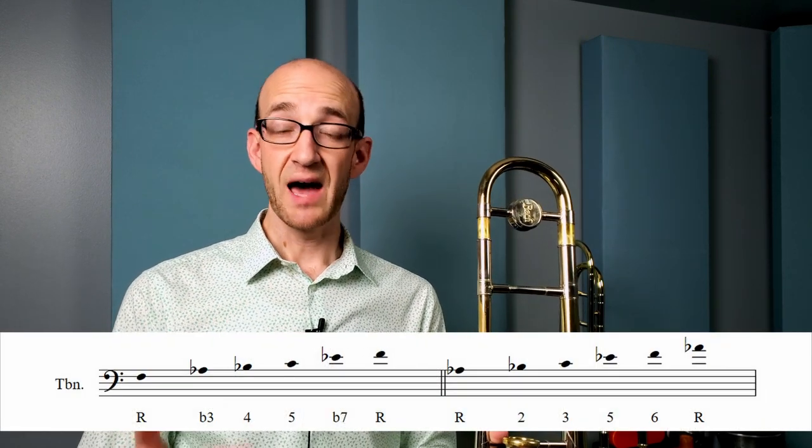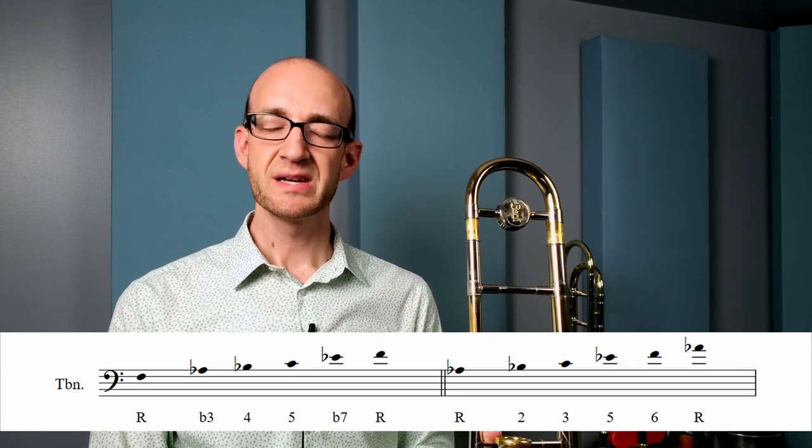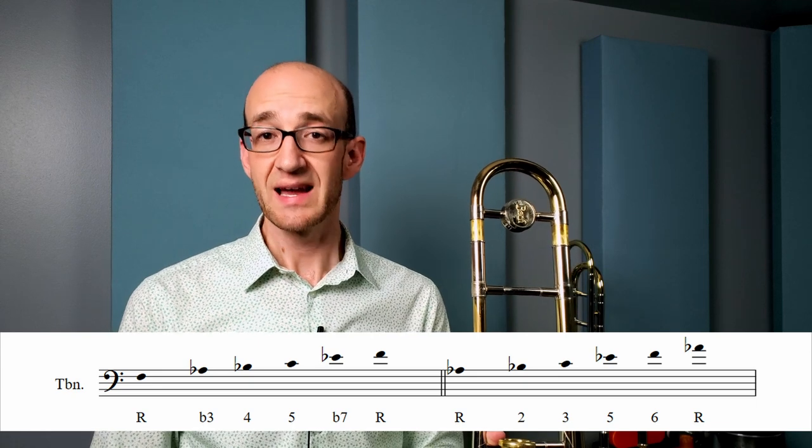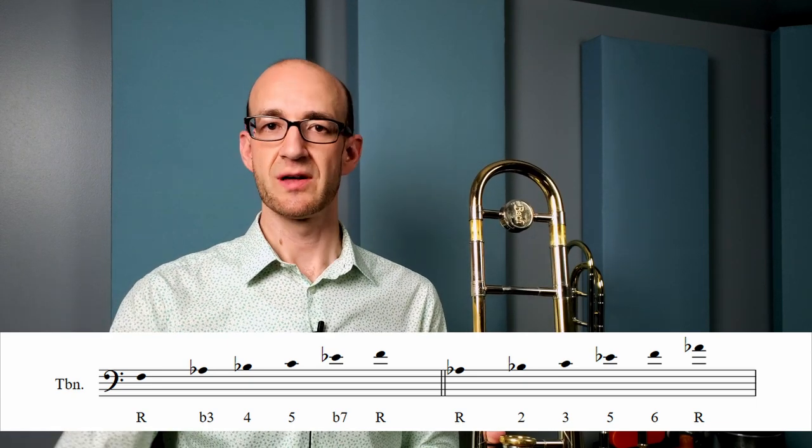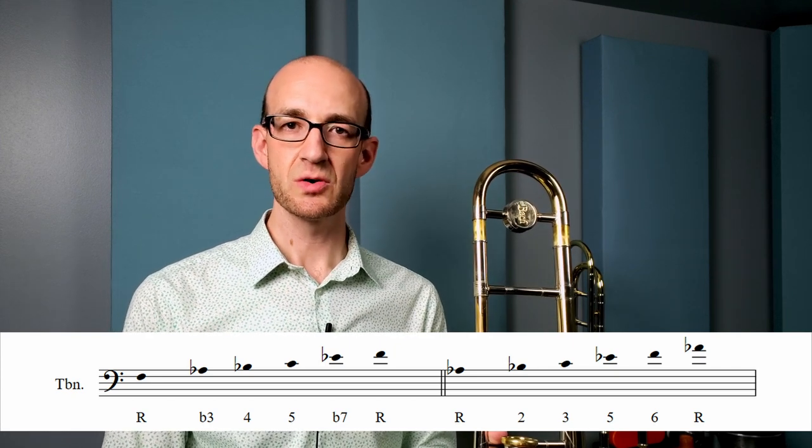So for example, if we are in the key of F minor here to start our song, our relative major would be A-flat for that key center because those two keys are relative to each other. And so we could think about A-flat major pentatonic on this particular chord.